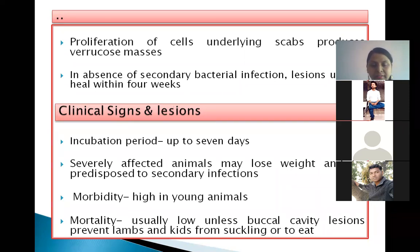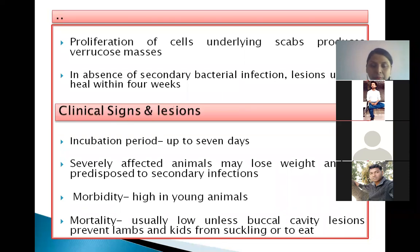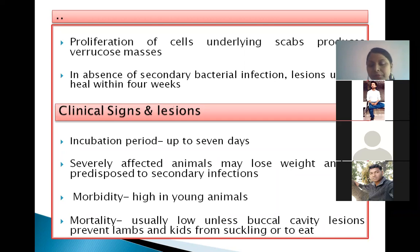The incubation period is generally up to 7 days. Seriously affected animals may lose weight and become predisposed to secondary bacterial infections. Morbidity is high in young animals, but mortality is usually low. However, if buccal cavity lesions are severe, they may prevent lambs from suckling or animals from taking food, and then the mortality rate is high.